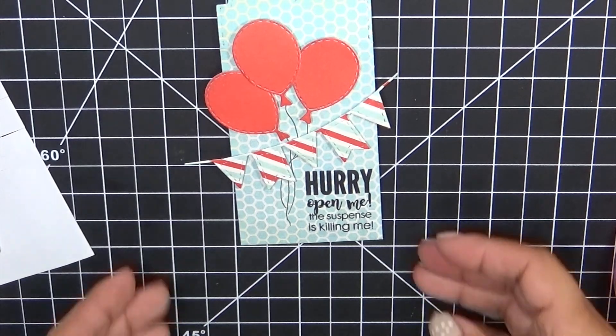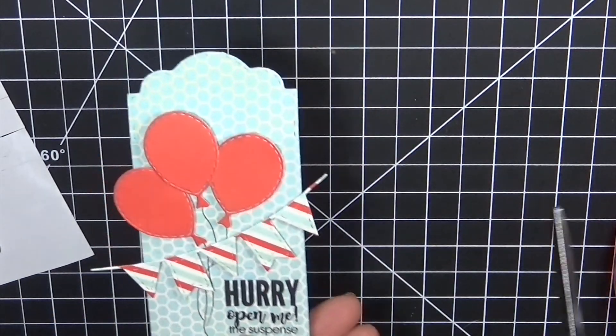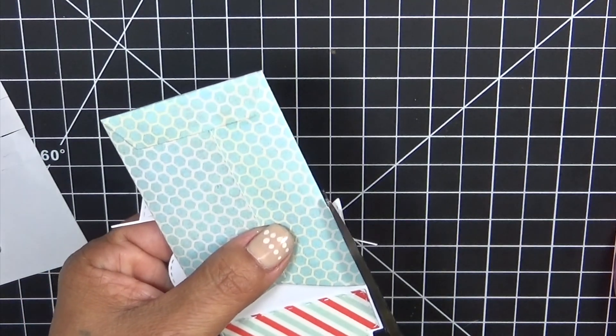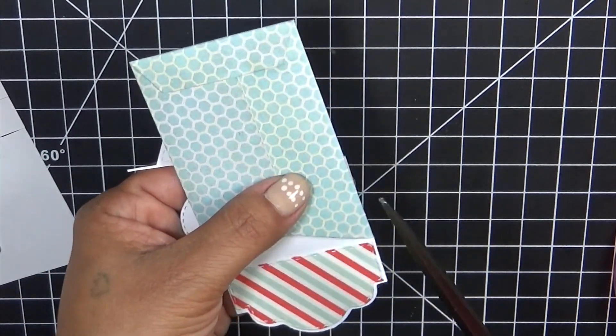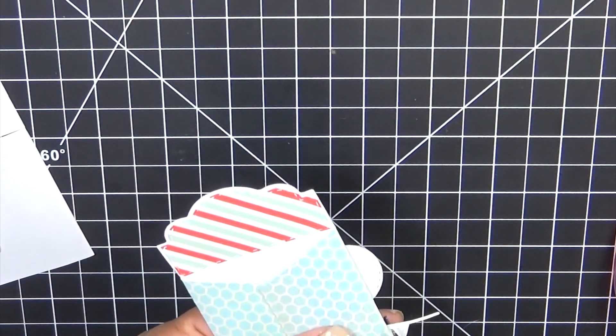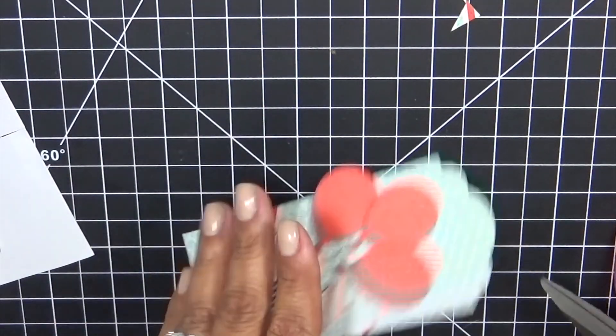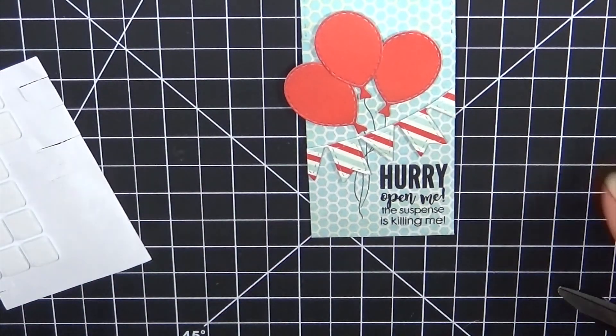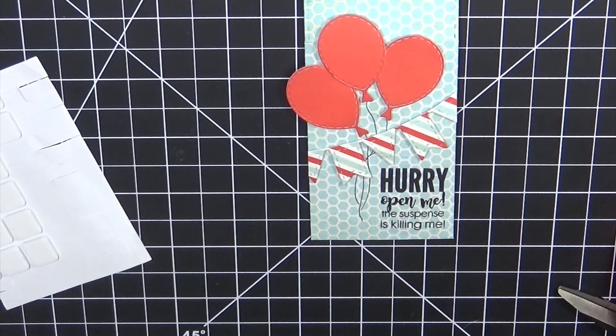And then what we are going to do is we are just going to go ahead and trim off the excess like so. Just like that. We are going to trim off this side as well. That's why I didn't want to put adhesive on the sides, because I knew I was going to trim that off.